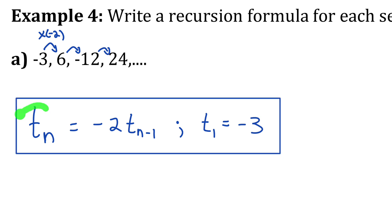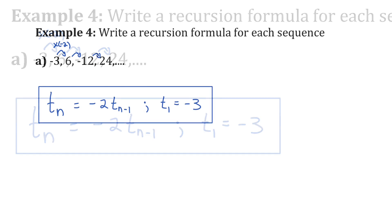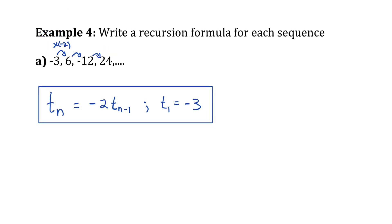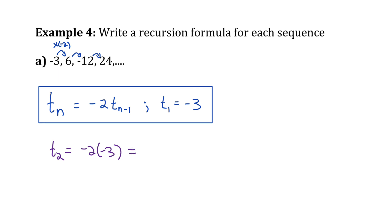To verify: if we want term 2, we do negative 2 times term 1. Term 1 is negative 3, so term 2 is 6 — which matches the sequence. Then multiplying that by negative 2 gives the next number, negative 12, and so on.